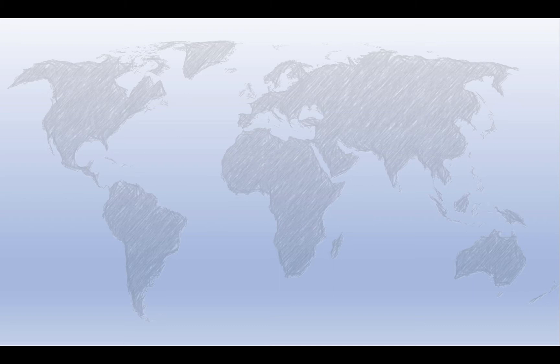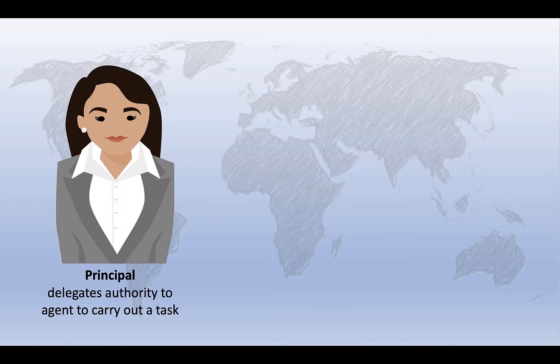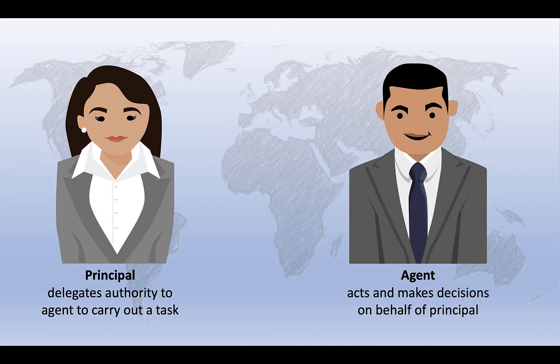The principal agent problem can emerge any time responsibility for carrying out a specific task or course of action is delegated from one person to another. The person delegating authority is the principal, and the person responsible for acting or making decisions on behalf of the principal is the agent.